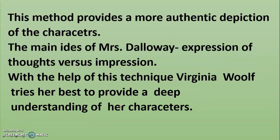She illustrates the relationship between the exterior world and the inner world — this is what is meant by internal and external subjectivity. The characters are shown thinking about themselves or about others, as seen in Mrs. Dalloway. One cannot think about Virginia Woolf's technique of stream of consciousness without switching back and forth between thoughts and the outer world. As a result, this method provides a more authentic depiction of the characters, and the main idea of Mrs. Dalloway seems to be the expression of thoughts versus impression. With this technique, Virginia Woolf strives to make us understand her characters on a personal level by making them more real.